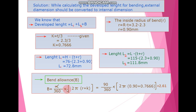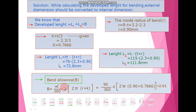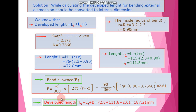Next, we calculate the bending allowance B. The formula is B equals (alpha divided by 360) multiplied by 2π multiplied by (r plus k). With alpha equal to 90 degrees, r equal to 0.90 mm, and k equal to 0.766, after substituting all values we get the bending allowance B equal to 2.61 mm.